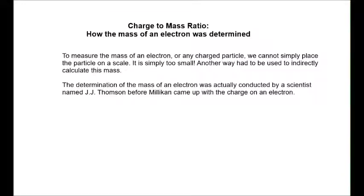In fact, this experiment did not directly determine the mass of the electron. It wasn't until Millikan came along and provided us with the charge on the electron that the mass could actually be determined. What was determined using today's information was the charge-to-mass ratio of the electron. The determination was actually conducted by a scientist named JJ Thompson, several years before Millikan came up with the charge on an electron.